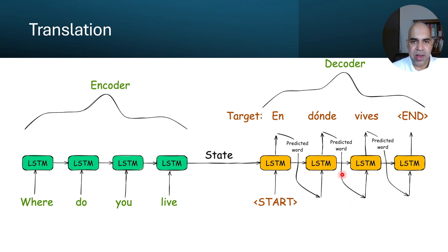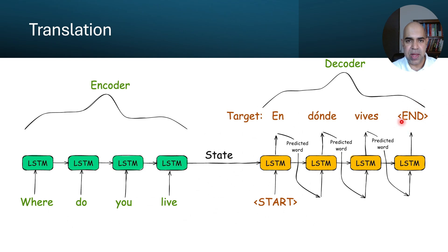In the decoder too, we have the unfolded version of LSTM shown here, where we have the Spanish translation of the English sentence "where do you live?". Notice that the first input token is a start-of-sequence symbol, which indicates that we are going to start decoding for the given encoder input. So the decoder can start predicting the next word given this context vector. The end-of-sequence token within angle brackets indicates the end of the sequence. In this example, the encoder is fed "where do you live?", against which the decoder, starting from the start token, should consecutively generate the Spanish translation and then the end token.